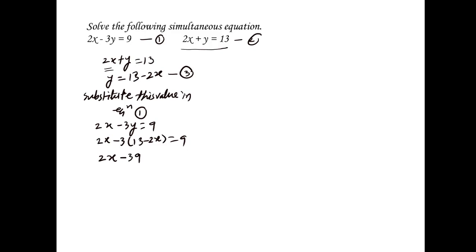Equation 1 is 2x minus 3y is equal to 9. Substituting y equals 13 minus 2x: 2x minus 3 times (13 minus 2x) equals 9. Multiplying: 2x minus 39 plus 6x equals 9. Since two negative numbers multiply to give a positive, we get plus 6x.